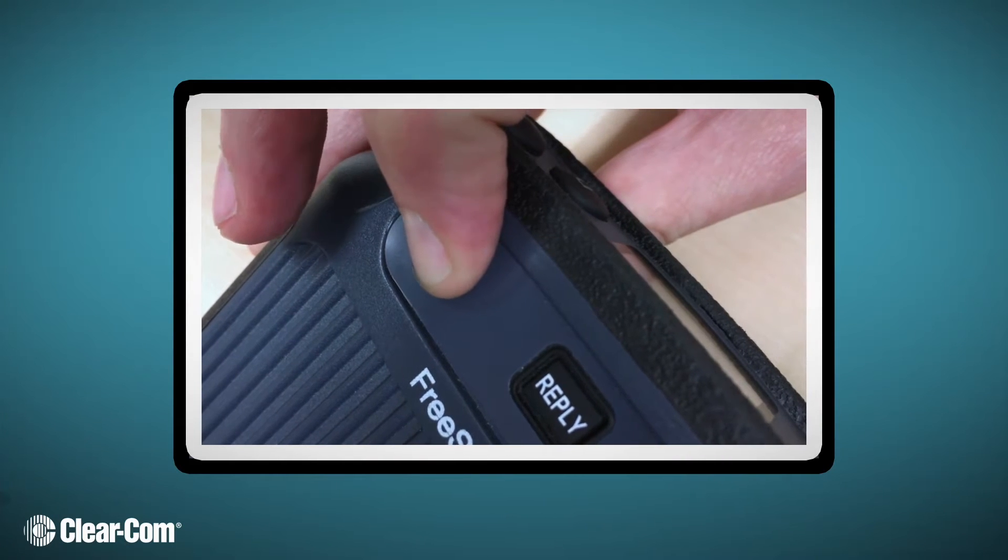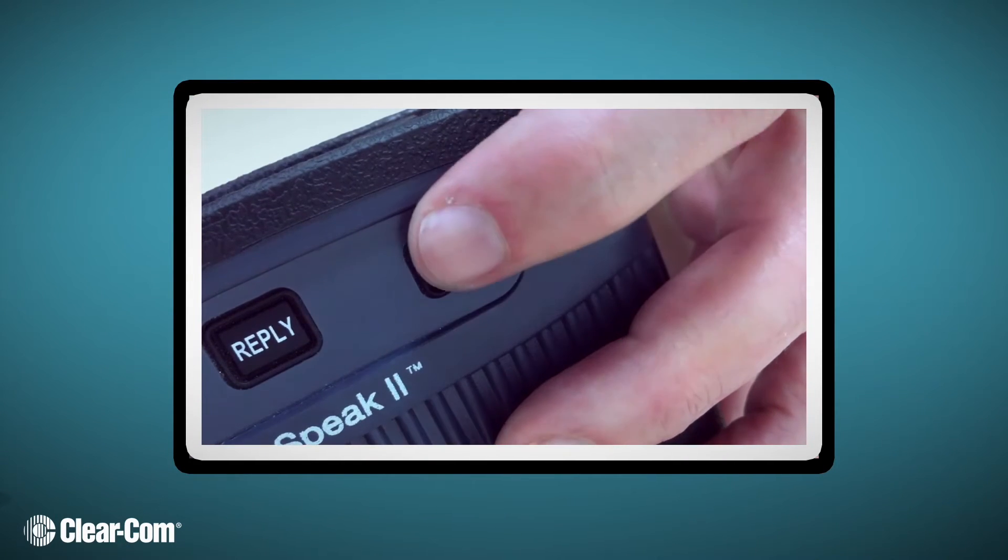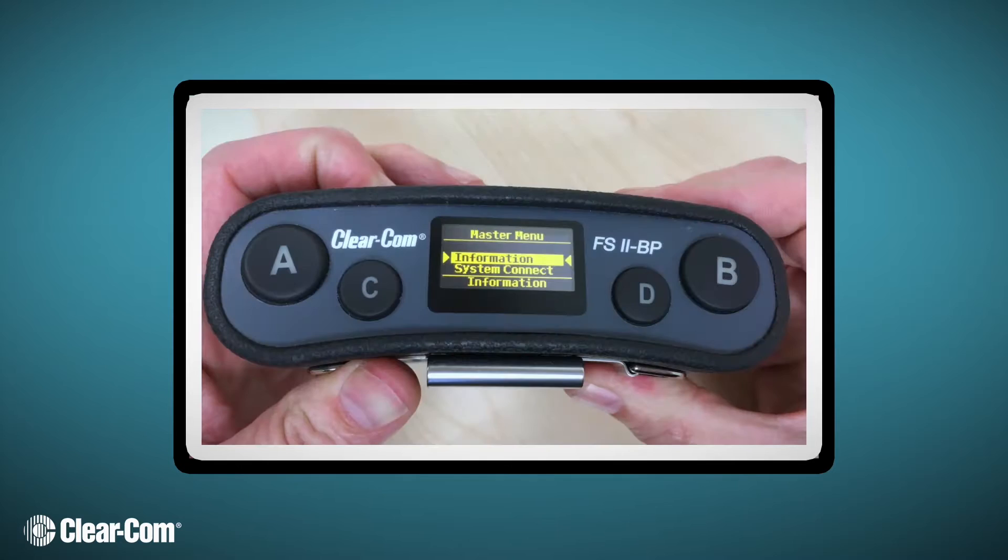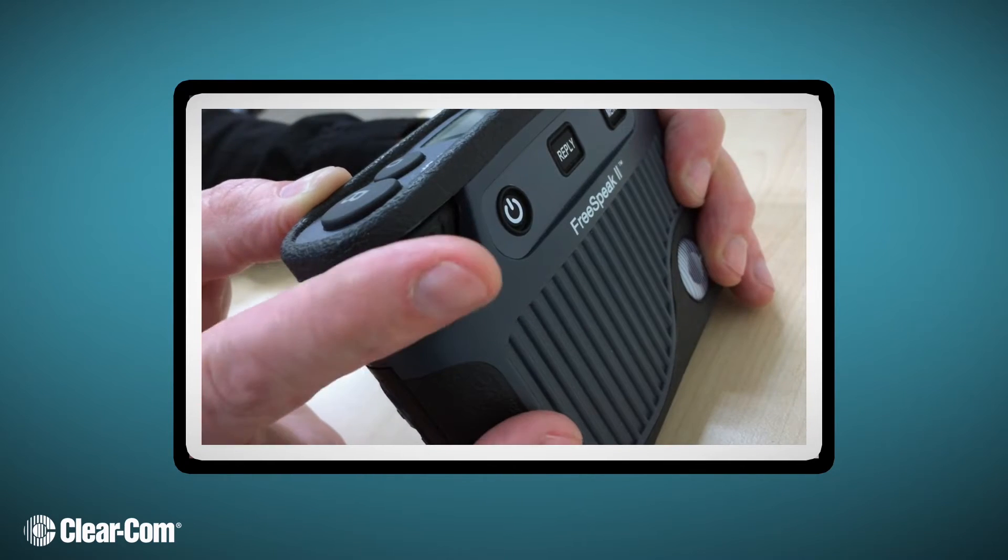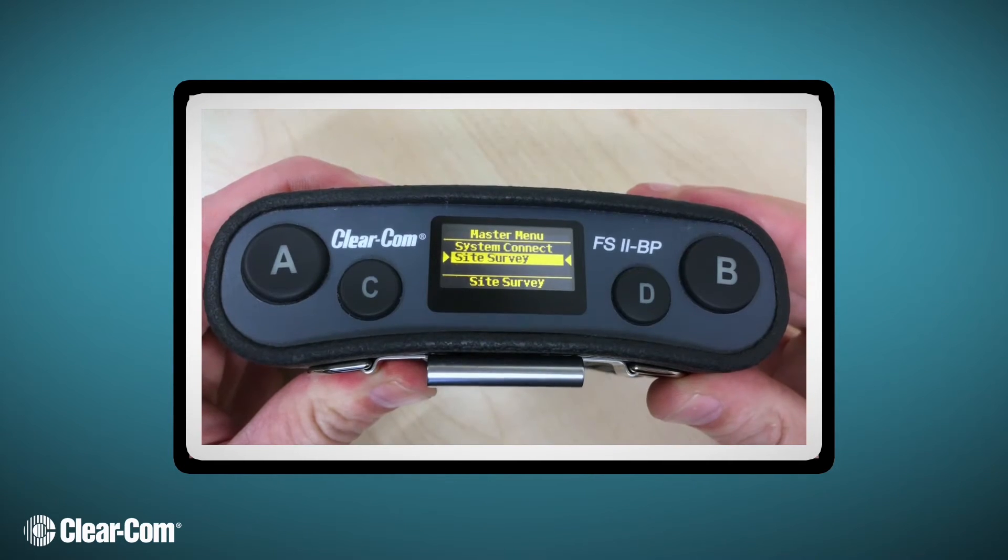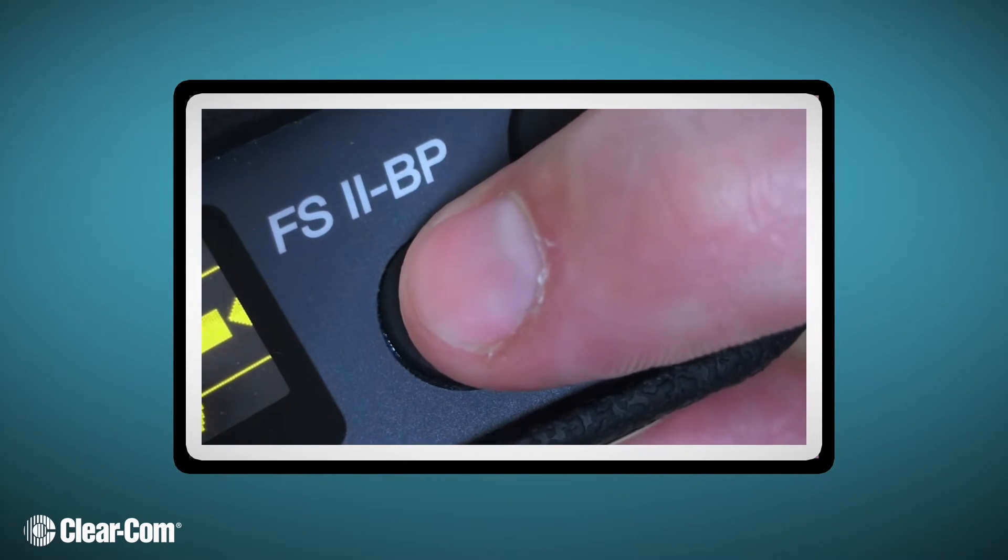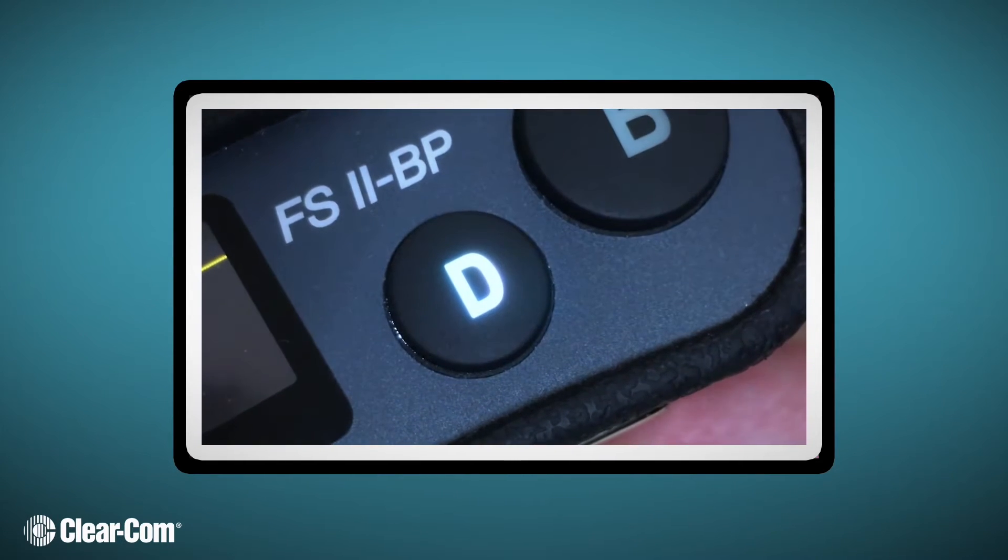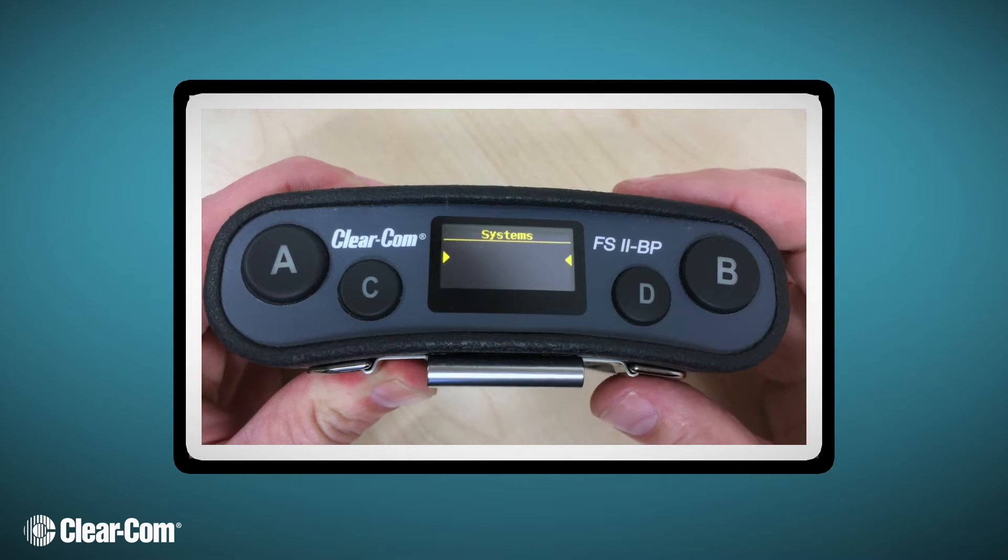Now, turn on the belt pack. Hold down the menu button. On the display, scroll through the menu with either the left or right rotary, highlight System Connect, and press D button to connect. When asked to disconnect, select Yes and press D to enter.